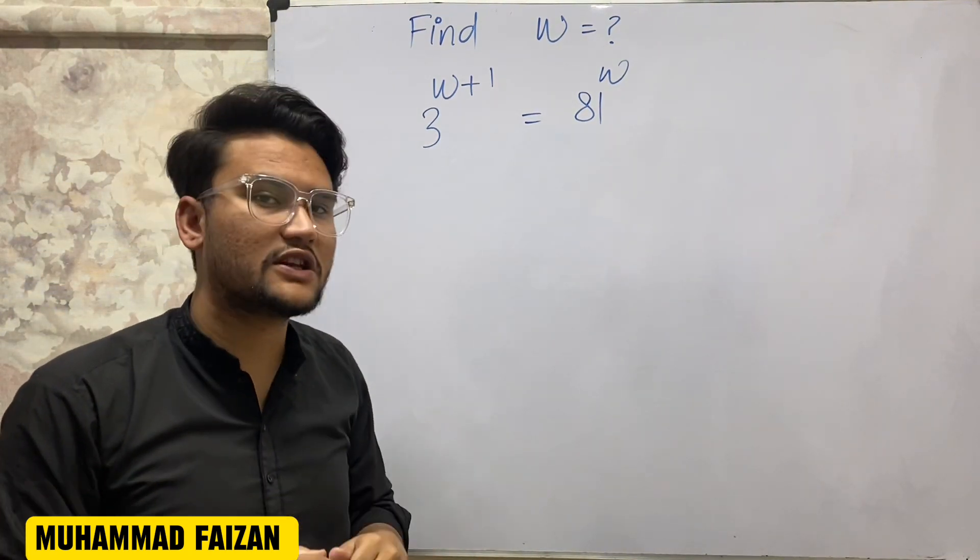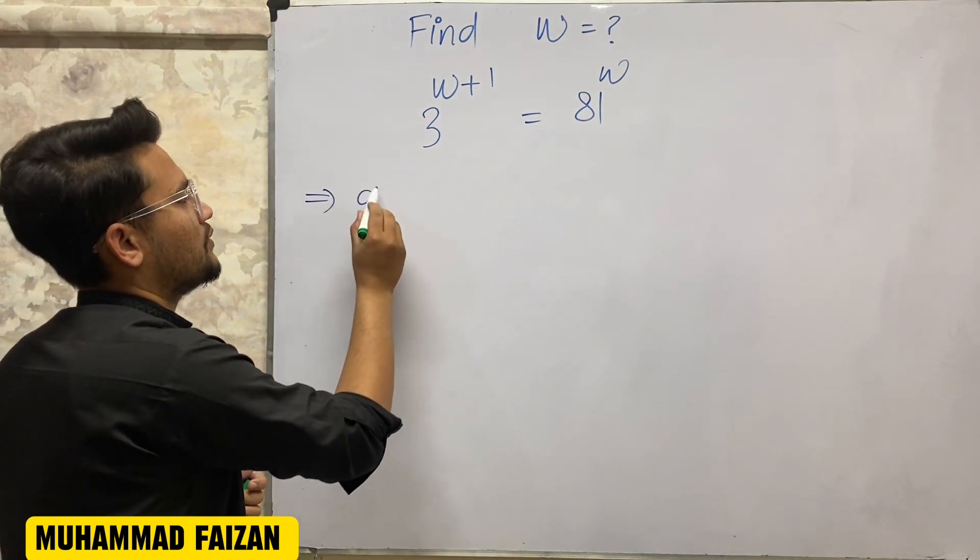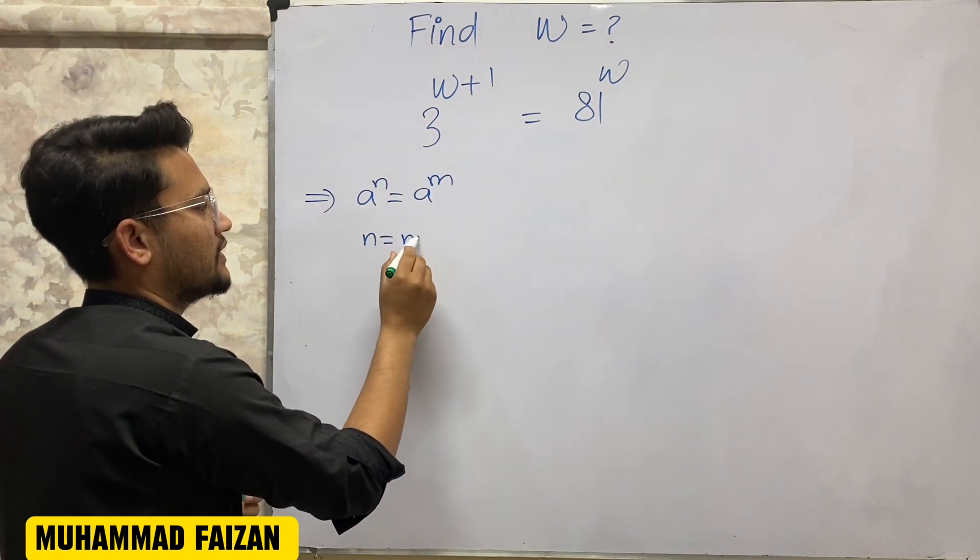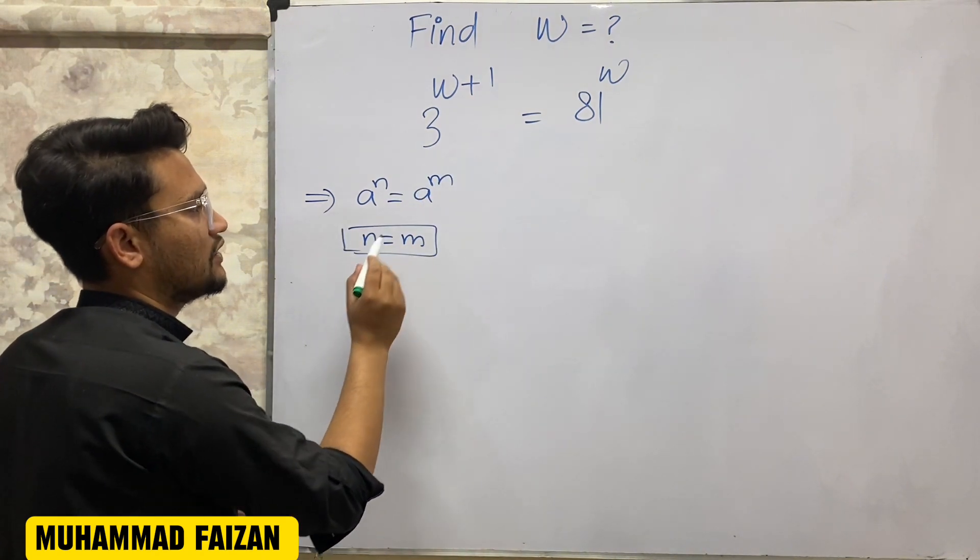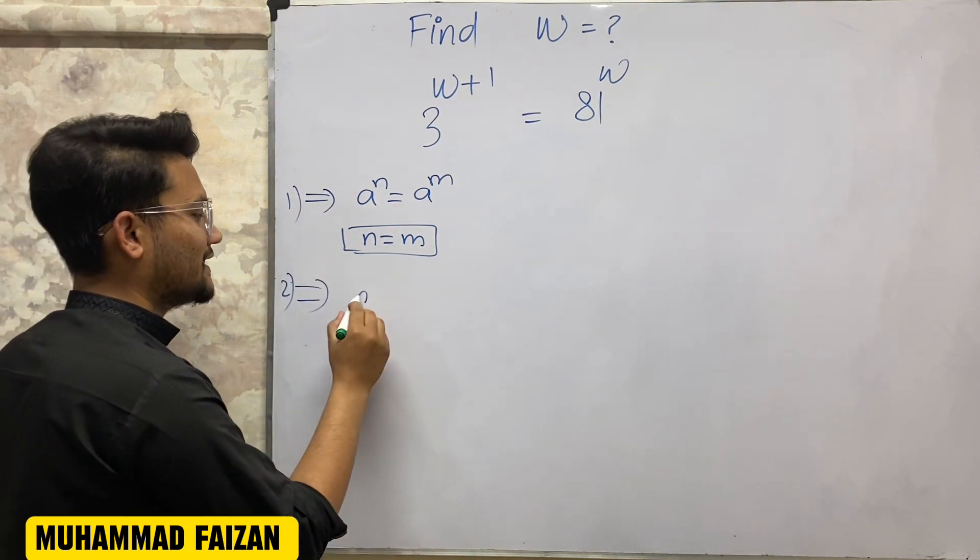The first method is if the base is the same, A and A, so N is equal to M. This is the first rule, Rule number 1. Rule number 2 is if the bases are different.